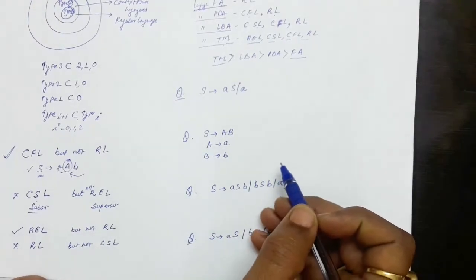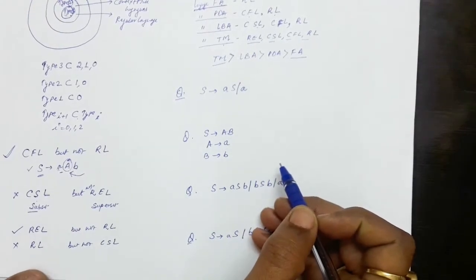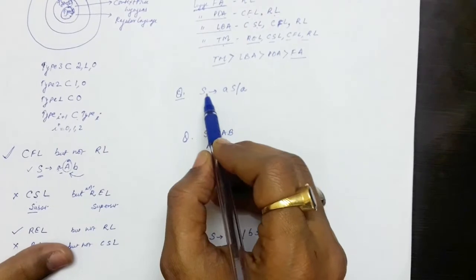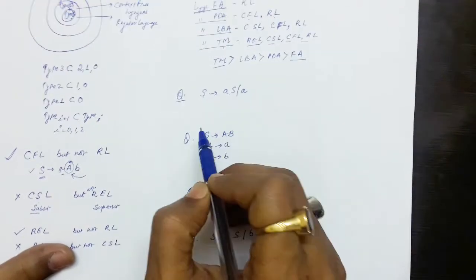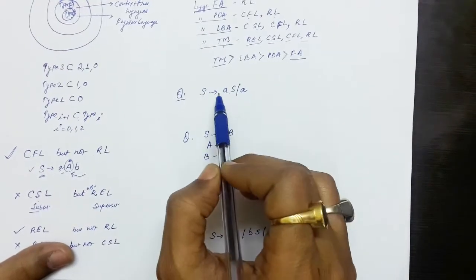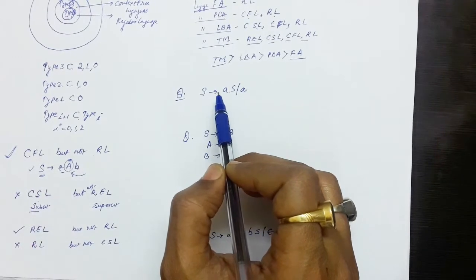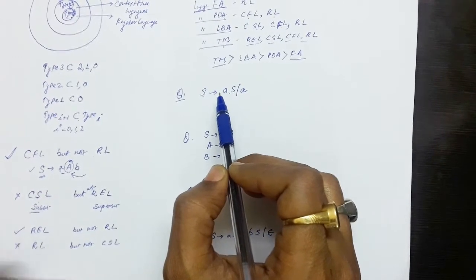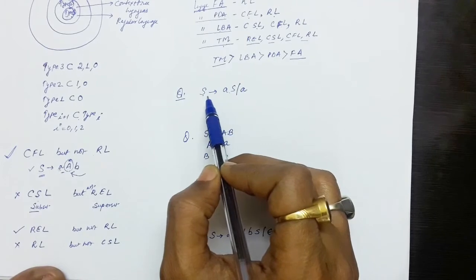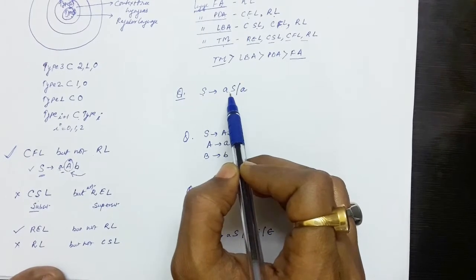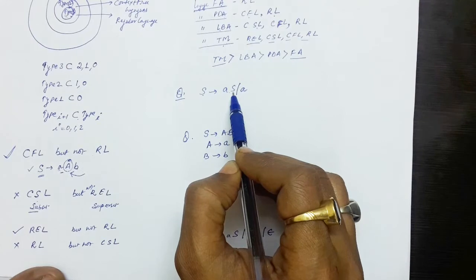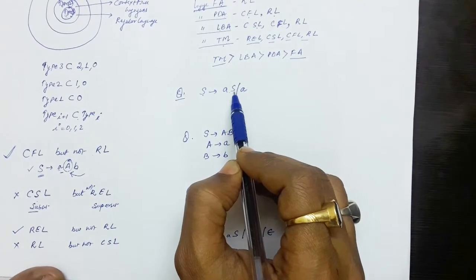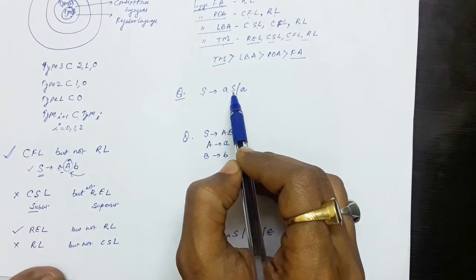In this lecture we will take some grammars and try to identify the type of the grammar. For example, we have a grammar S produces aSb and a. This grammar has the production of the kind S produces aS, meaning we have only one non-terminal on the right hand side and the non-terminal symbol is appearing towards the right.